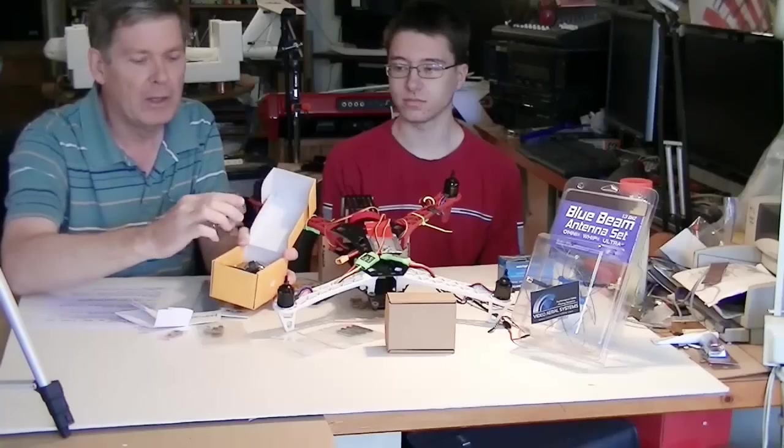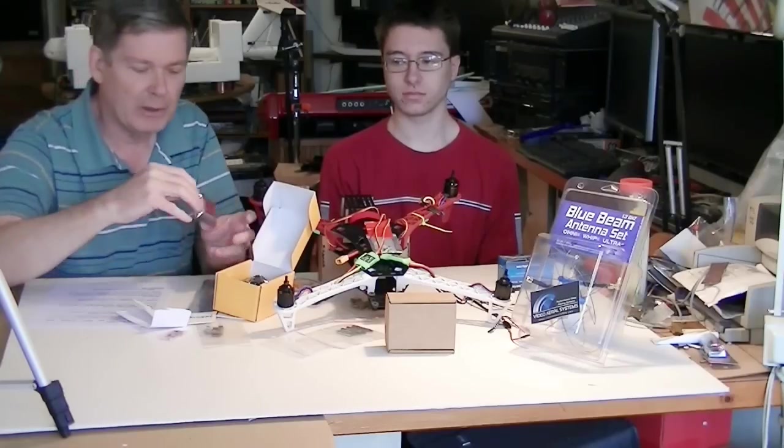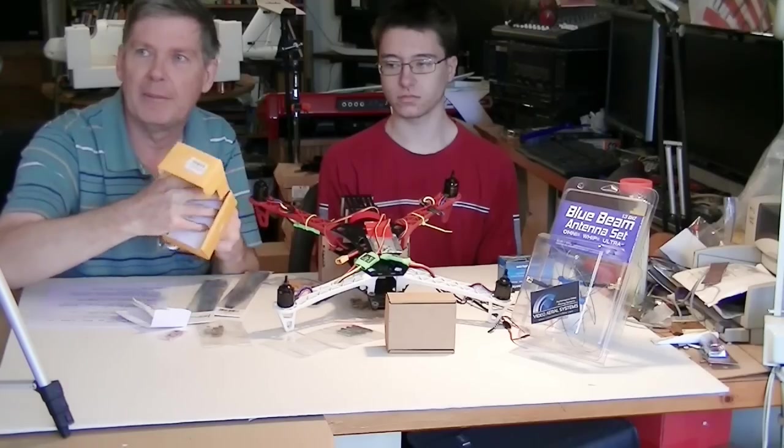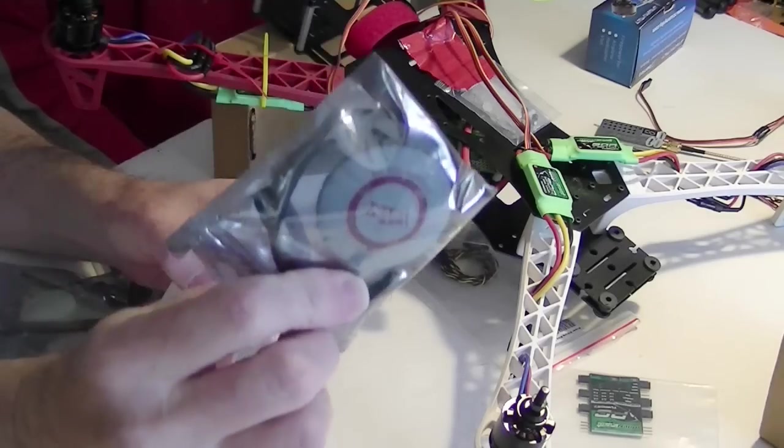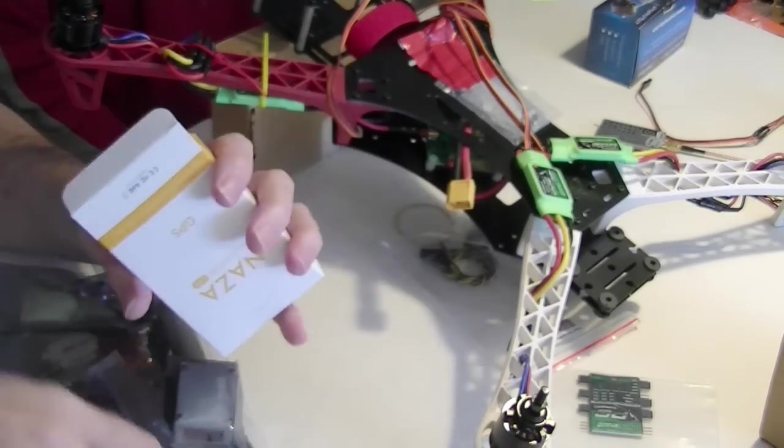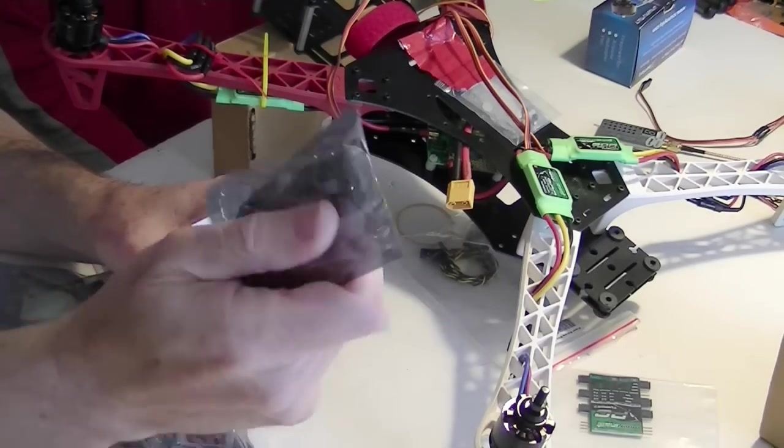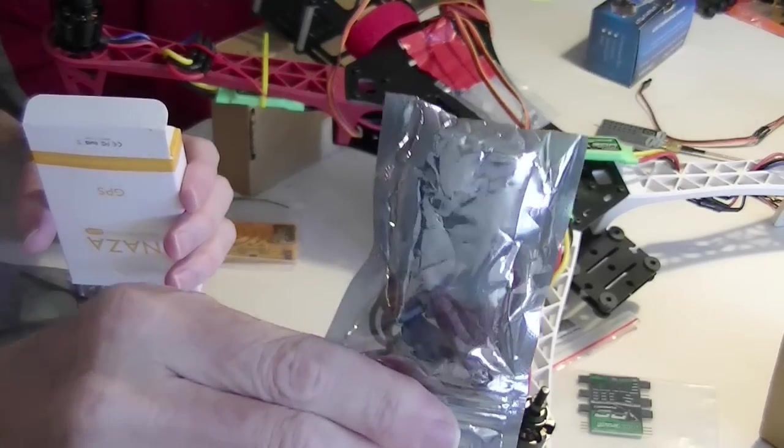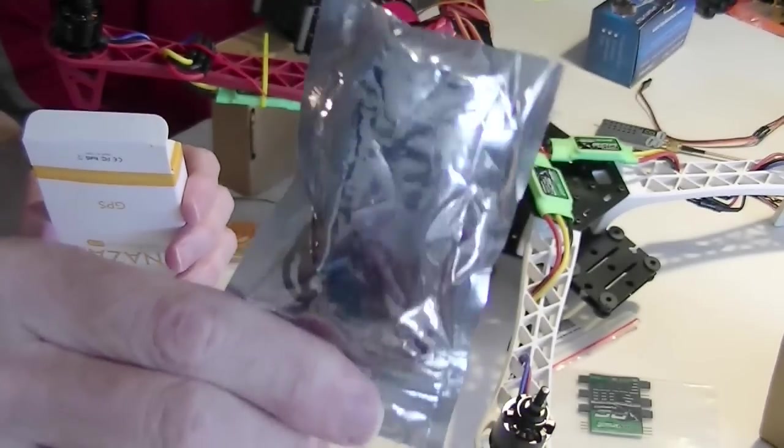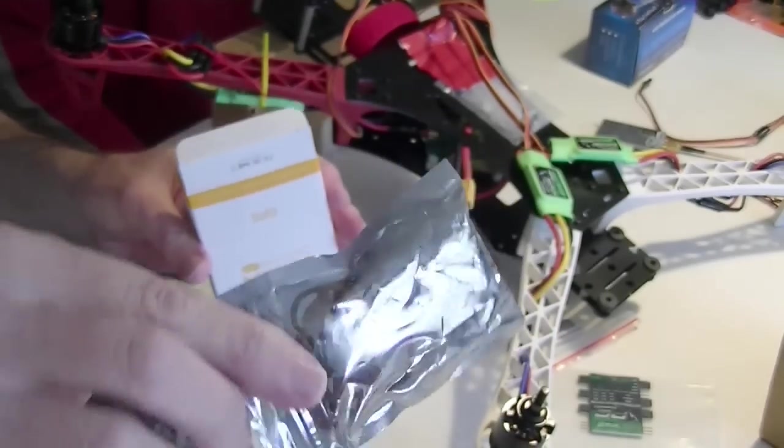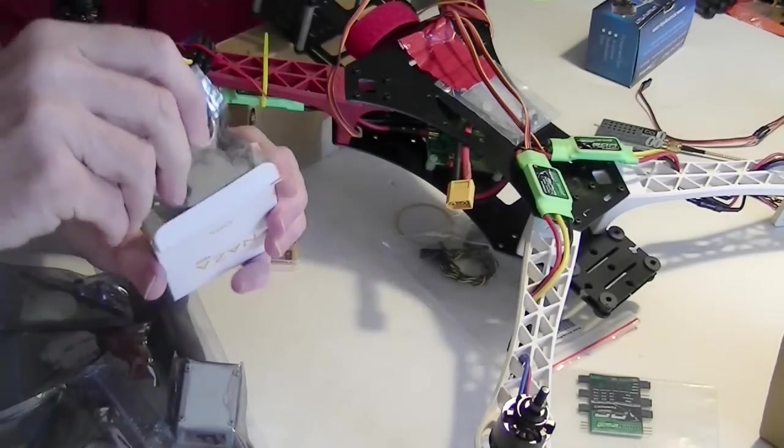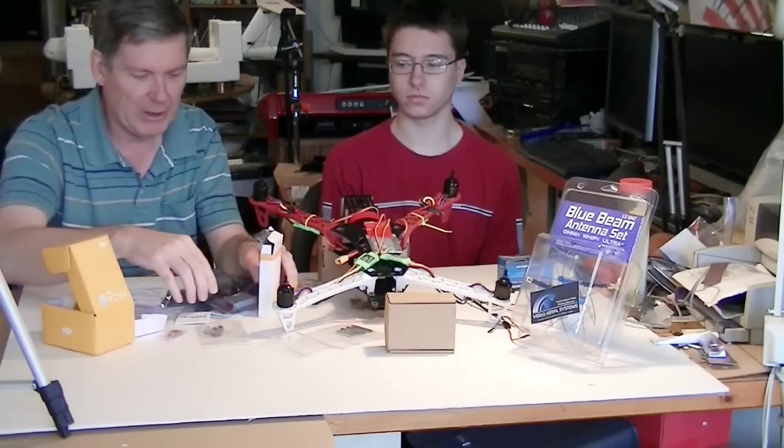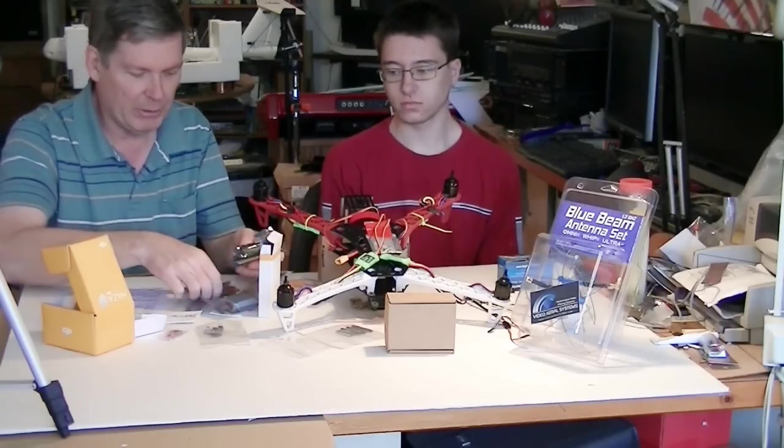It has the NAZA M-Lite module and it's got a GPS module in here, way down in the bottom. There is the GPS and there is what's called the LED or the power module. I can't show it to you very good because it's in a bag, but we'll get it out later in another video and show you how it goes together.